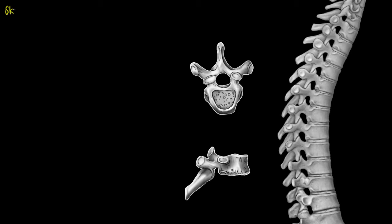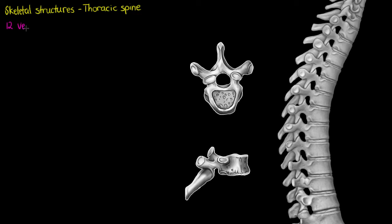Welcome to this tutorial where we are going to be talking about our spine and the unique features found on our thoracic vertebrae. I've zoomed in our spine here so we can see our thoracic vertebrae straight away, and it's going to be the segment of our spinal column that articulates with our ribs and helps to create our thoracic cavity.